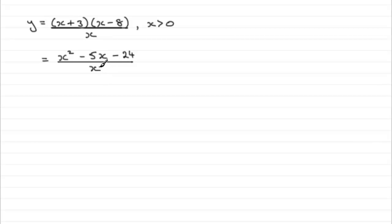What you've got to do is try and express this as three separate terms. And one way is because there are three terms all over this one term x, we can think of this as x squared divided by x minus the 5x divided by x and the minus 24 divided by x.